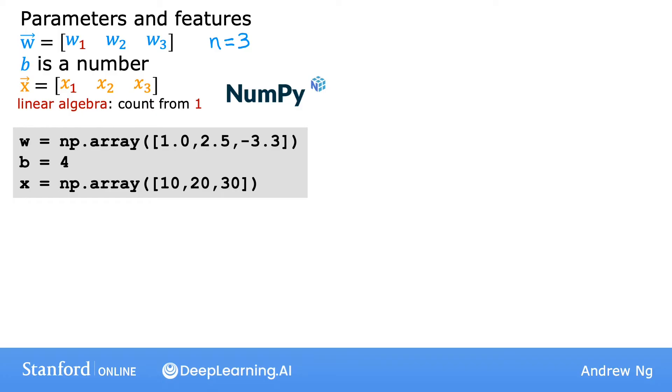Because in Python the indexing of arrays or counting in arrays starts from zero, you would access the first value of w using w square bracket zero, the second value using w square bracket one, and the third using w square bracket two. So the indexing here goes from zero, one to two rather than one, two to three. Similarly, to access individual features of x, you would use x zero, x one, and x two. Many programming languages including Python start counting from zero rather than one.